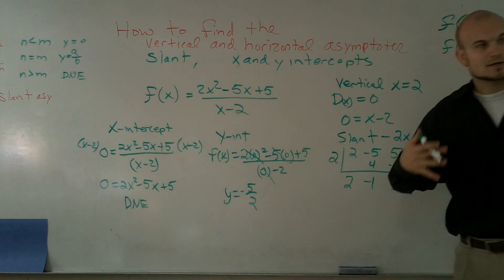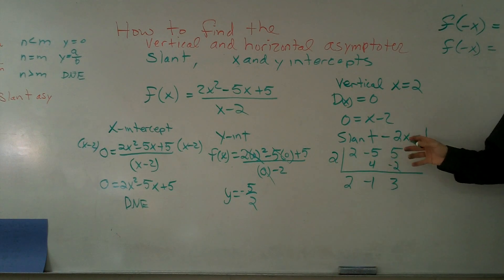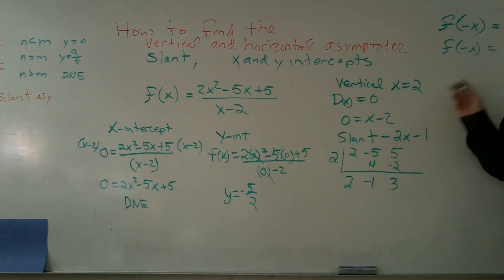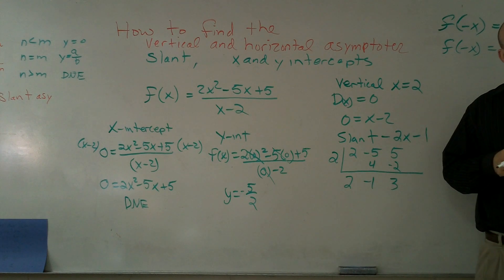So therefore when I go ahead and graph this, it's actually the line of 2x minus 1 is where the asymptote is going to be.